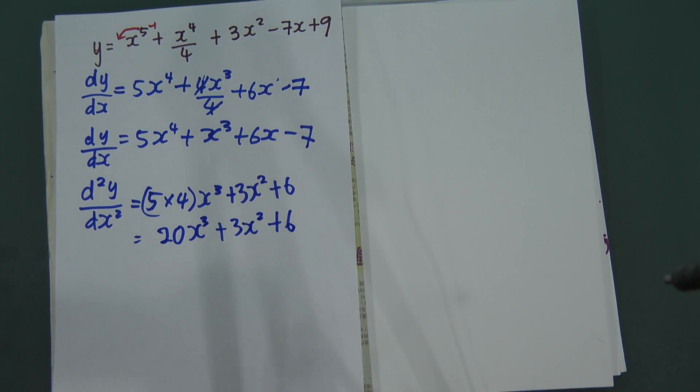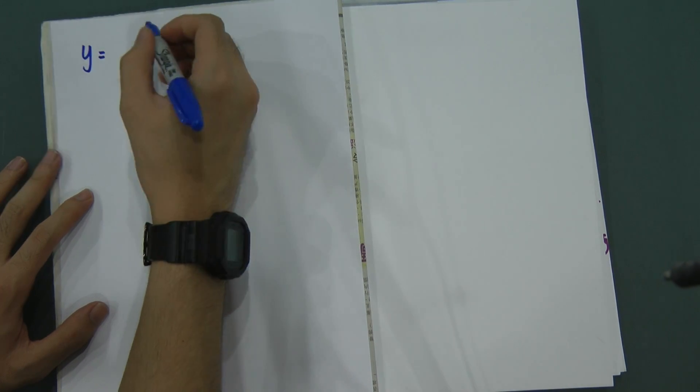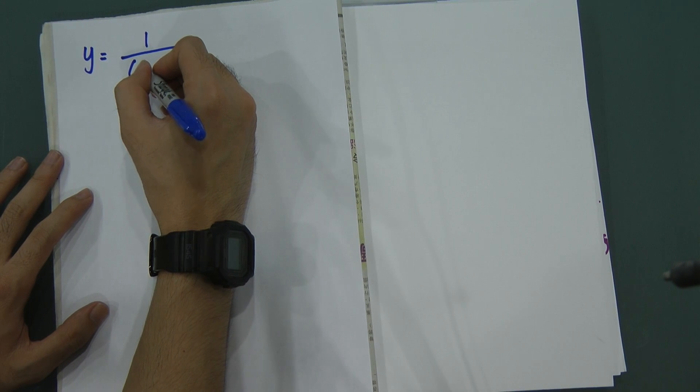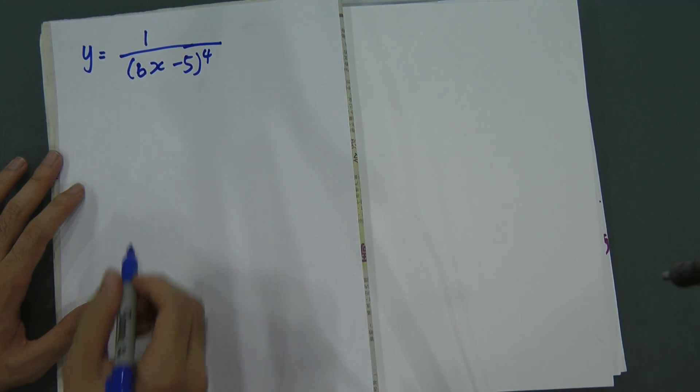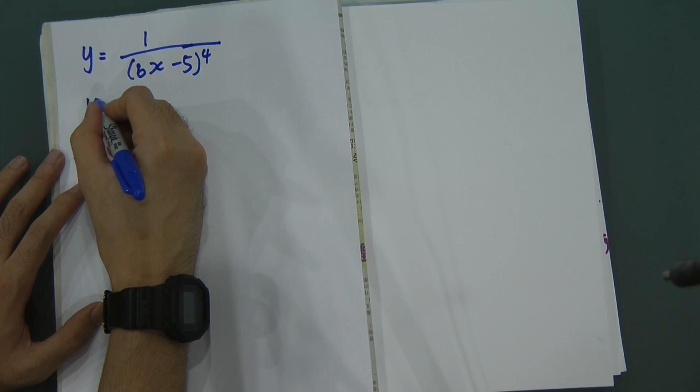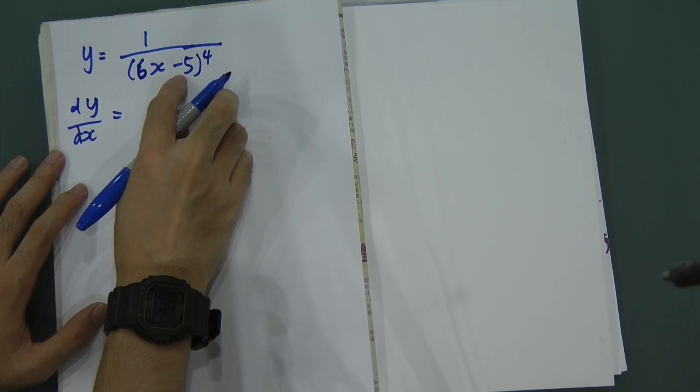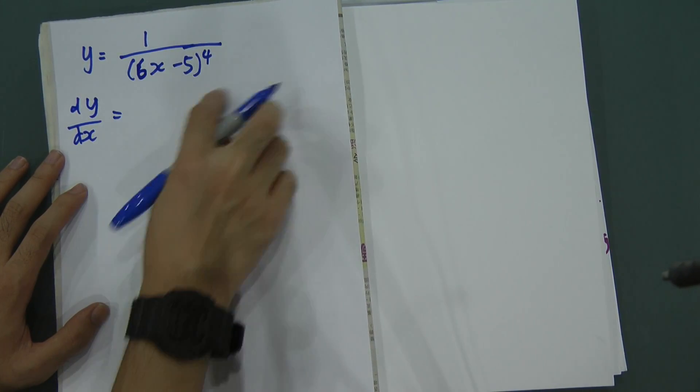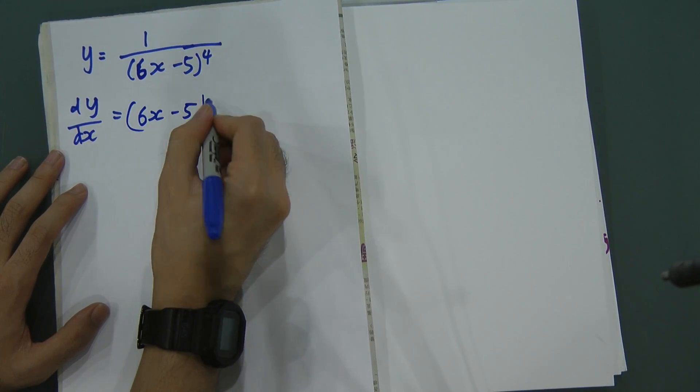What happens if the example is like that? If, let's say, y equal to 1 over 6x minus 5 power of 4. When you see like this, you have to know when you divide the x. What will happen is, if this is 6x minus 5 holding power of 4. First thing is this one, you have to change it using indices way. This one, we call it 6x minus 5 power of negative 4.